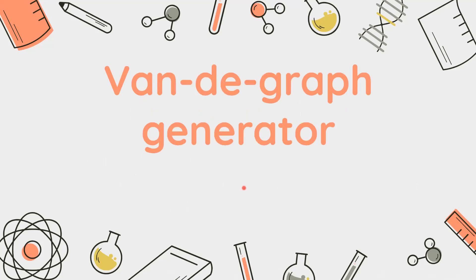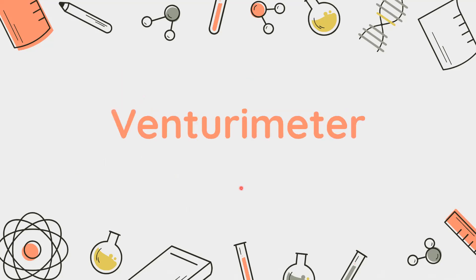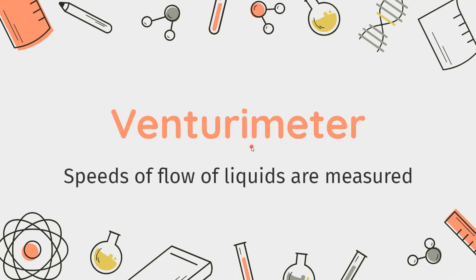Next is the Van de Graaff Generator, used to produce high potential difference. The device used to measure potential difference is the Potentiometer. Then we have the Venturi Meter, which is basically used for measuring the speed of flow of liquid.